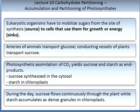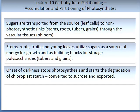During the day, sucrose flows continuously through the plant, while starch accumulates as dense granules in the chloroplast. Sugars are transported from the source — the leaf cells — to non-photosynthetic sinks such as stems, roots, tubers and grains, through the vascular tissues, the phloem, as we learned in lecture 9. This process is called translocation.